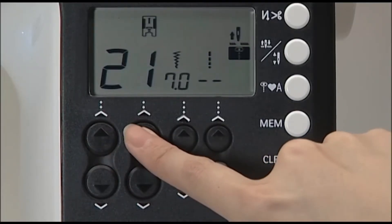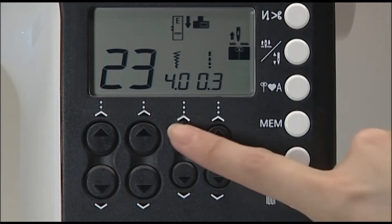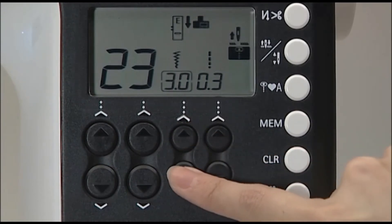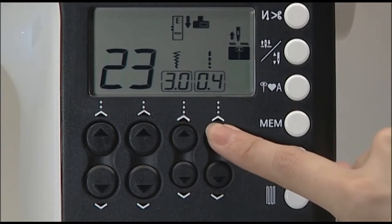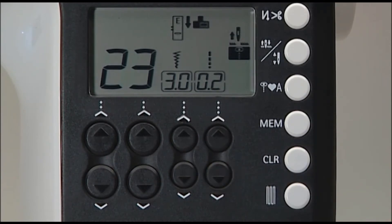When you choose your desired stitch pattern, the machine automatically displays the standard zigzag width and stitch length. To adjust these settings manually, use the zigzag width and stitch length adjustment buttons located below the screen.